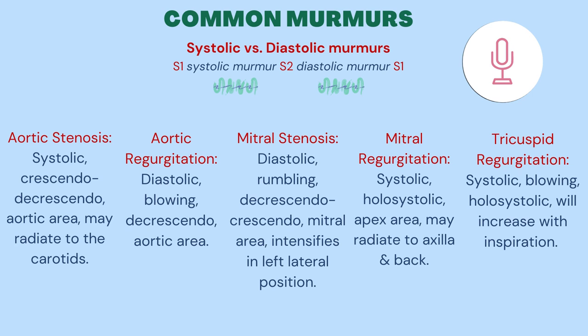some of the blood pools back in the left ventricle due to either damage to the aortic valve leaflets or dilation of the aortic annulus. Chronic aortic regurgitation is best heard at the left sternal border, leaning forward at end expiration.